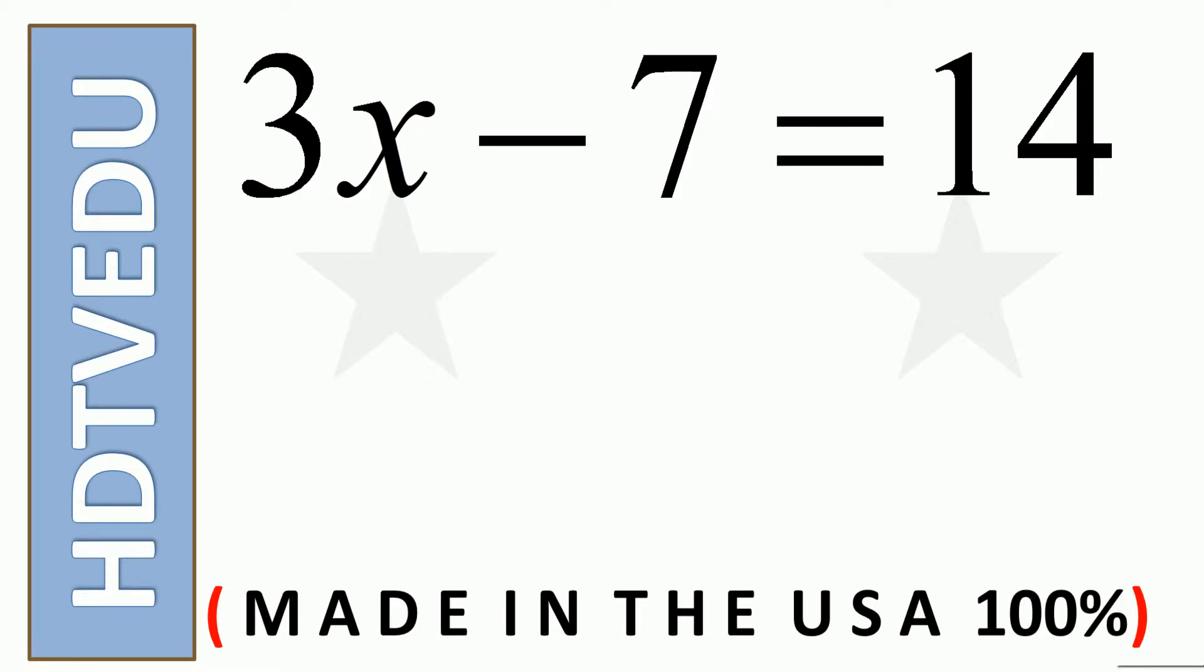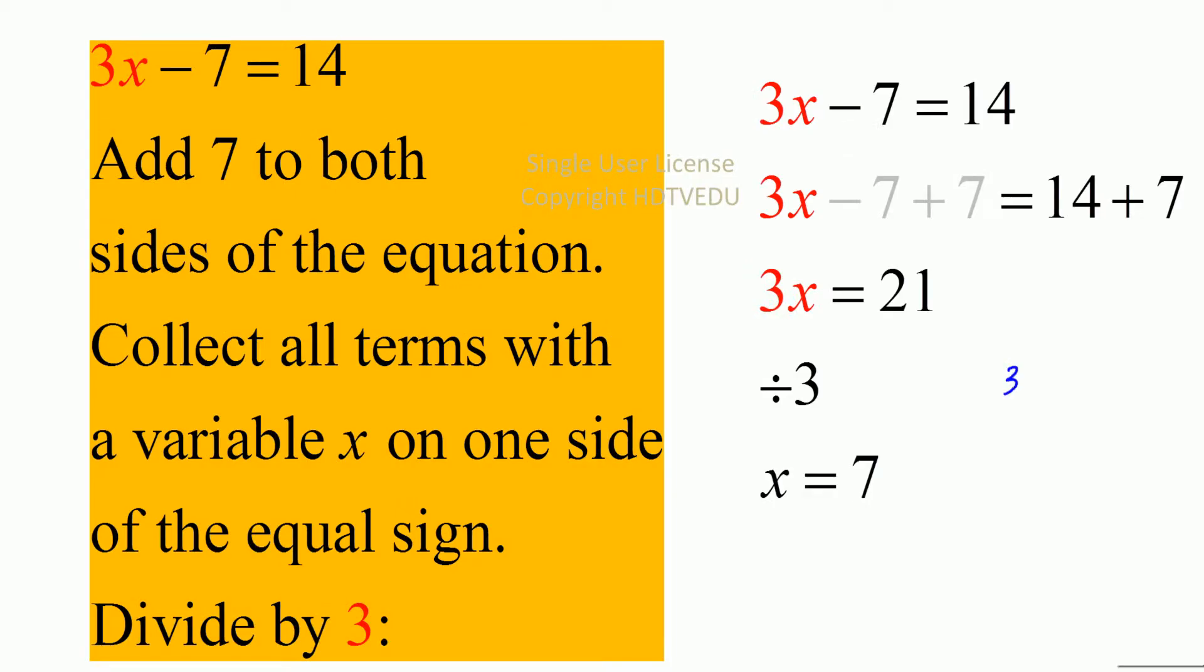3x minus 7 is equal to 14. Solve for x. So we have 3x minus 7 is equal to 14.